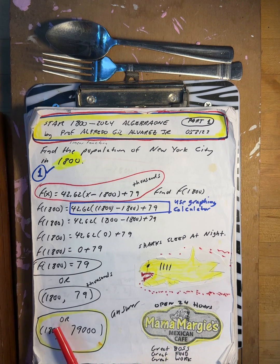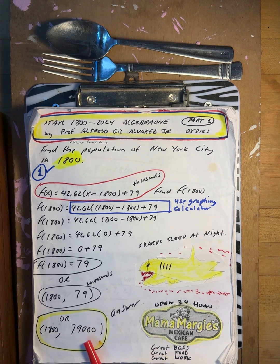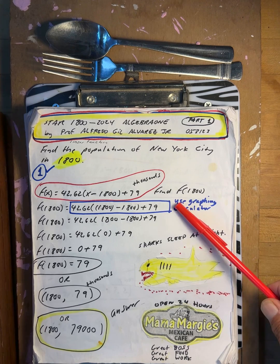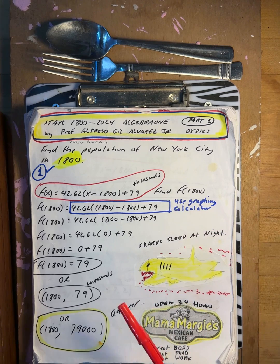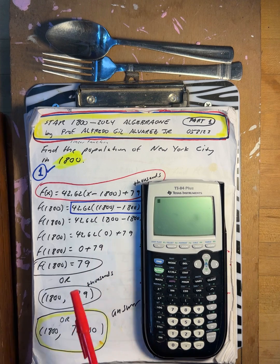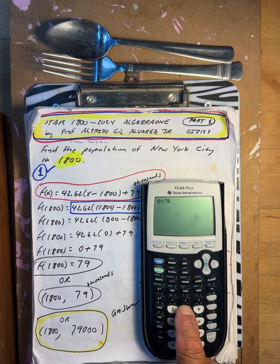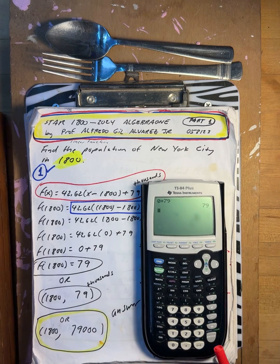f of 1800 is 79 thousands. So in the year 1800, the population is 79 thousand. You can use a graphing calculator here — just do 0 plus 79, enter, and you get 79.